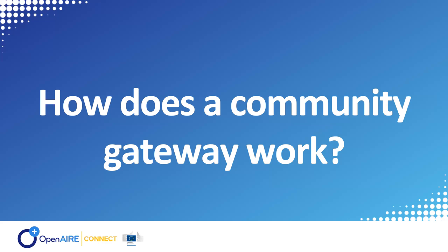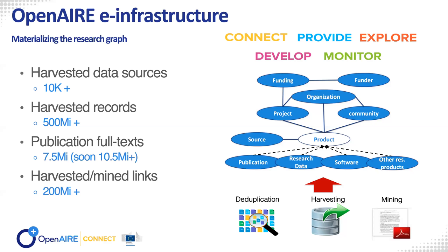All this functionality is offered via a community gateway for open science, powered by one of OpenAIRE's main services: the OpenAIRE Research Graph. OpenAIRE collects from institutional repositories, thematic repositories, funder databases, and many other types of data sources and content providers. We collect metadata about publications, research data, software, and other types of research products such as protocols, methods, and workflows.